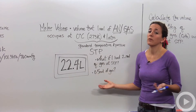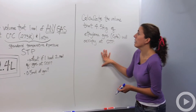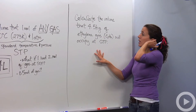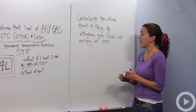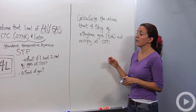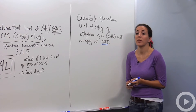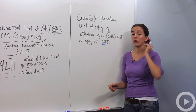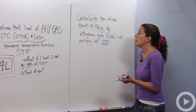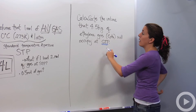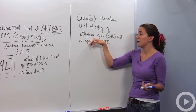So how can we use this number when dealing with calculations? Let's do a problem. Let's calculate the volume that 4.5 kilograms of ethylene gas, C2H4, will occupy at STP. The only time I can use 22.4 liters is when my conditions are STP. Otherwise, you might have to calculate that particular volume using gas laws. So first we need to figure out how many moles of ethylene gas we have.